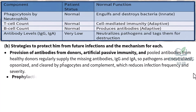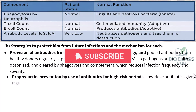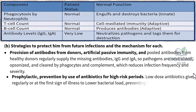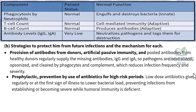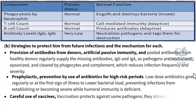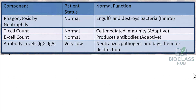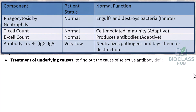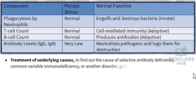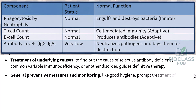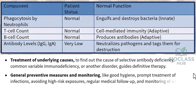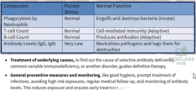Prophylactic use of antibiotics for high-risk periods: low-dose antibiotics given regularly or at the first sign of illness lower bacterial load, preventing infections from establishing or becoming severe while humoral immunity is deficient. Careful use of vaccines stimulates the patient's adaptive system to make antibodies and memory. Treatment of underlying causes — identifying common variable immunodeficiency or another disorder — guides definitive therapy. General preventive measures include good hygiene, prompt treatment of infections, avoiding high-risk exposures, and regular monitoring of antibody levels.